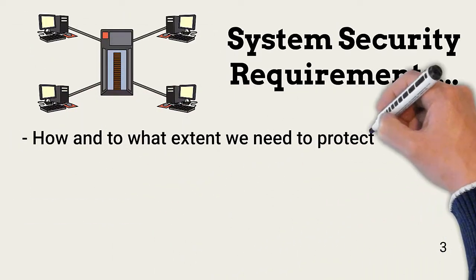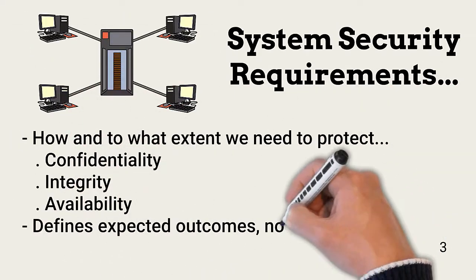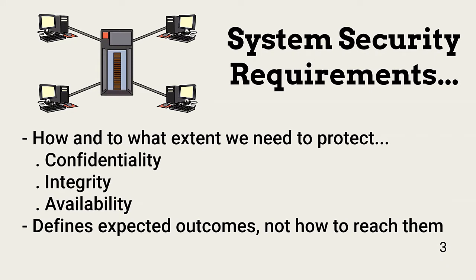System requirements define how and to what extent we need to protect the confidentiality and integrity of the associated data. Further, they specify expectations about how to ensure the availability of data when and where it's needed.